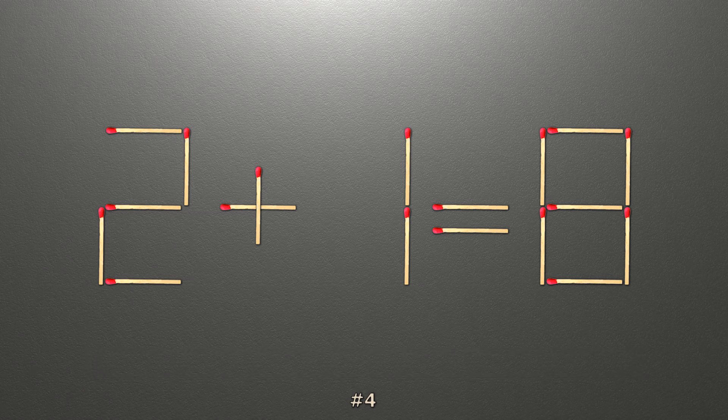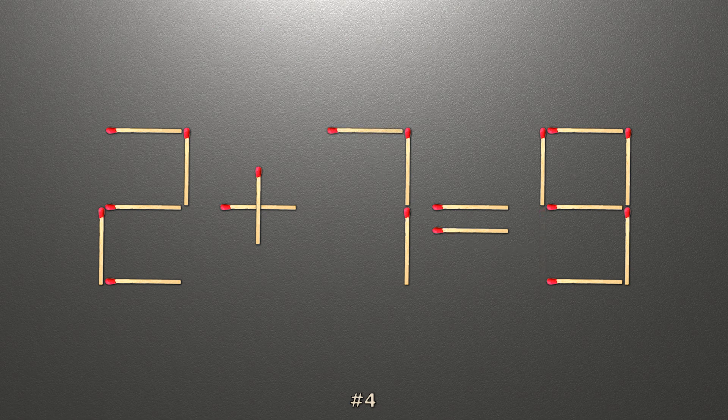To do this, all we need to do is move this match right here. Now when we check the condition, 2 plus 7 is 9, and 9 equals 9. Now our equality is correct.